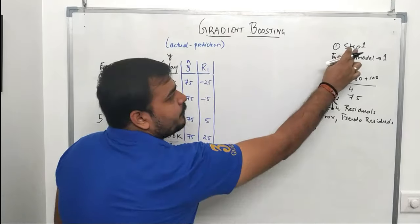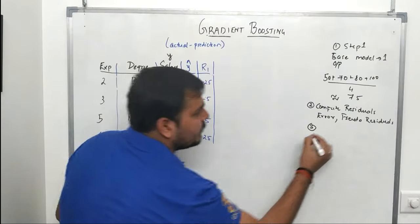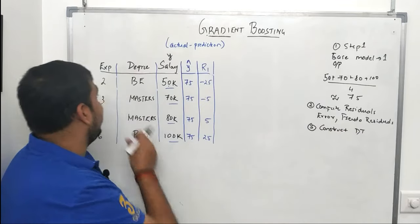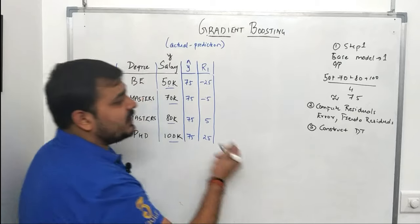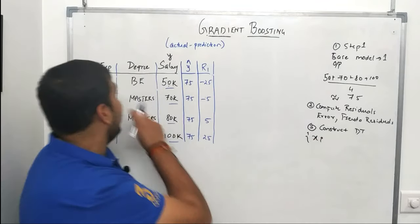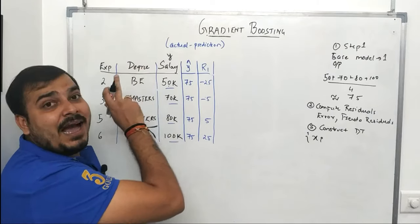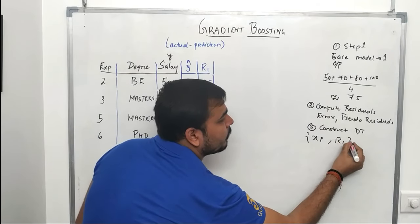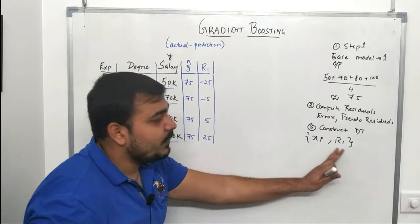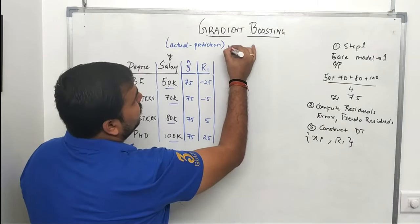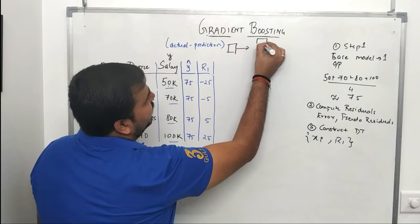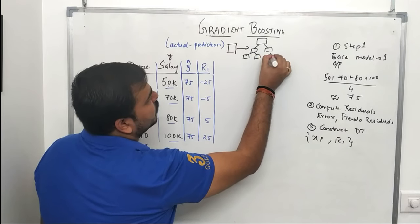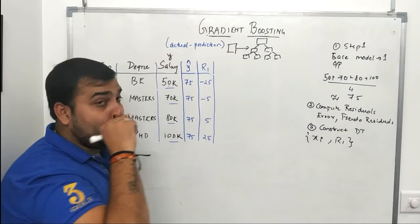The third important step: after the base model I add one decision tree sequentially. In this decision tree the input features are the same — experience and degree — but the output dependent feature is not salary; it is the residual error r1. So I've trained this decision tree where the target is the residuals.